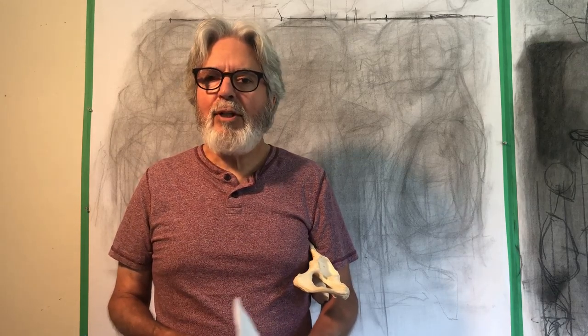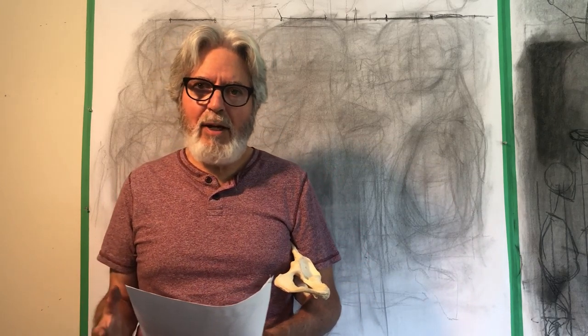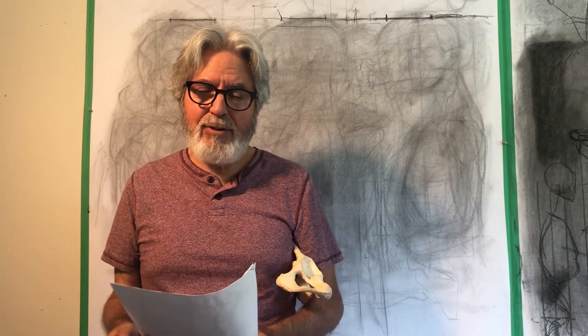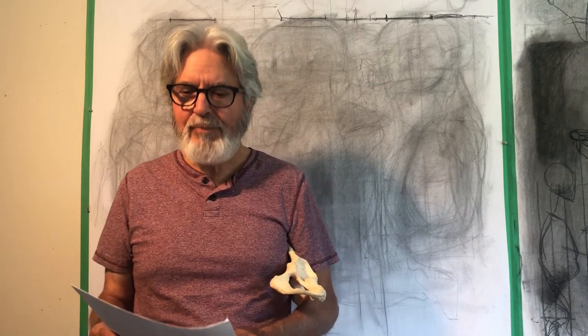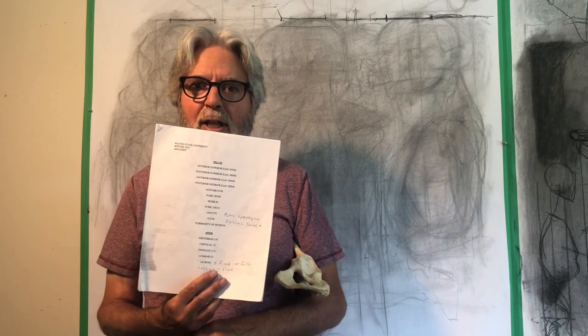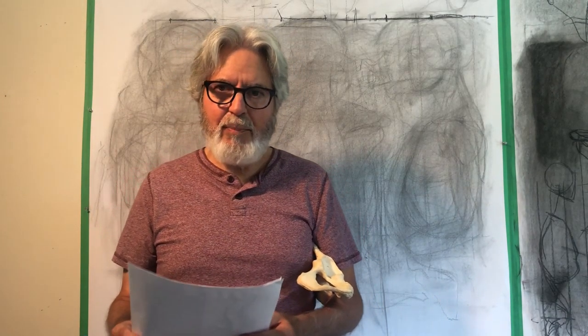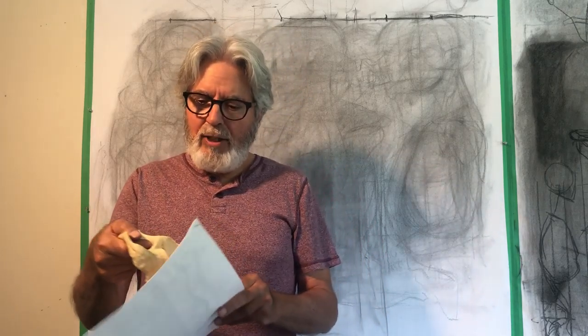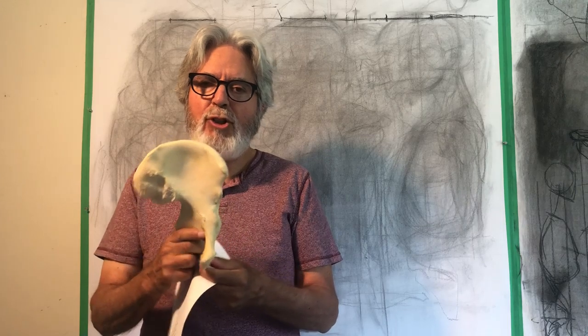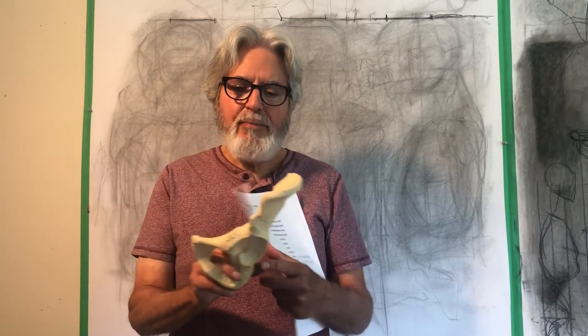Hello class, we're back again with demonstration number three. Today we're going to be looking at the pelvis from various angles, and we're going to begin to look at the spine and some of its parts — how it relates the head, the ribcage, and the pelvis together. All of you have a handout like this one. Here at home I only have half of a pelvis, which I mentioned in our last class with the skeleton, so this is kind of a refresher.